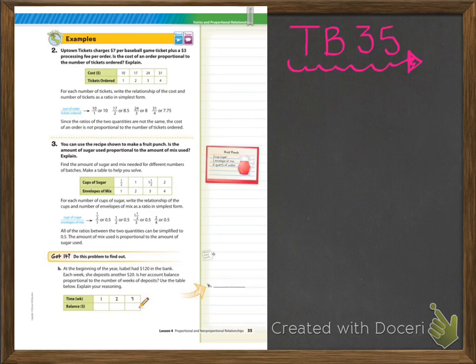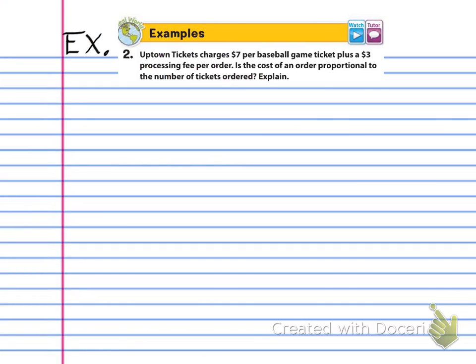Now you want to be looking at textbook page 35. On textbook page 35, you can see example two. It says Uptown Tickets charges $7 per baseball game ticket plus a $3 processing fee order. Is the cost of an order proportional to the number of tickets ordered? Explain.